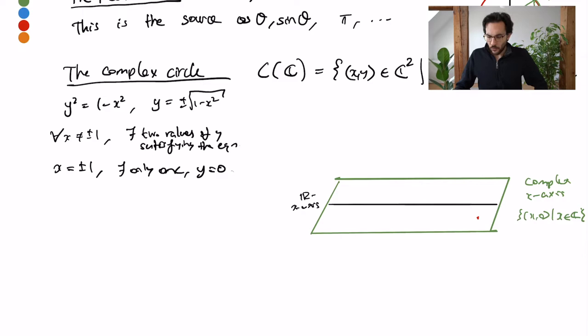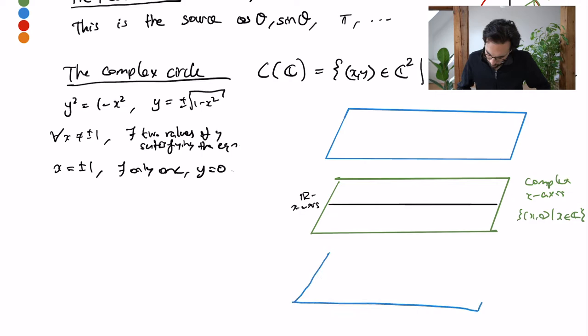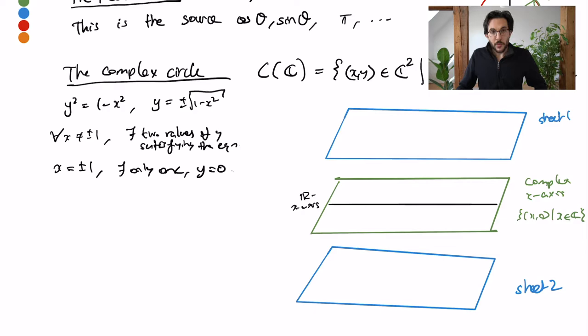It means that for every value of x that I choose there should be two values of y above and below. Now if I were to do this for every point here I should get two copies of the x-plane. So this is sheet 1, this is sheet 2. In some sense these are the square roots and these are the two sheets of the square root, the plus sign and the minus sign so to speak.